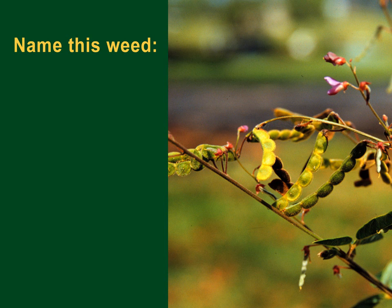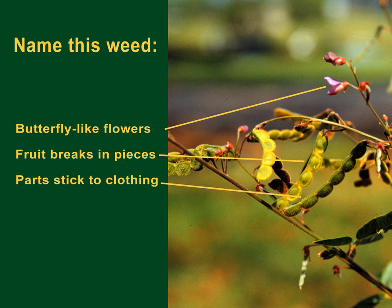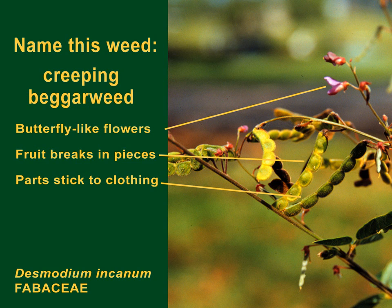A broadleaf weed that can be quite a nuisance has fruits that segment — the fruit segments break into pieces and stick to clothing. The tiny violet flowers look almost like little butterflies. This plant is creeping beggar weed, in the Fabaceae, or legume family.